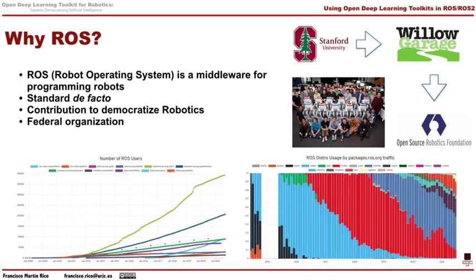ROS has not become what it is today because it is technically superior to other alternatives. The secret of its success is that it has created a huge community of developers who collaborate to advance this middleware and improve it day by day. Perhaps one of the factors that contributed to this has been its federated organization. Each contributor organization or company has its own repositories and contributes to the community by following a series of standard mechanisms for developing and packaging software. Another factor for this success is the choice of open standards and a clear open source philosophy.